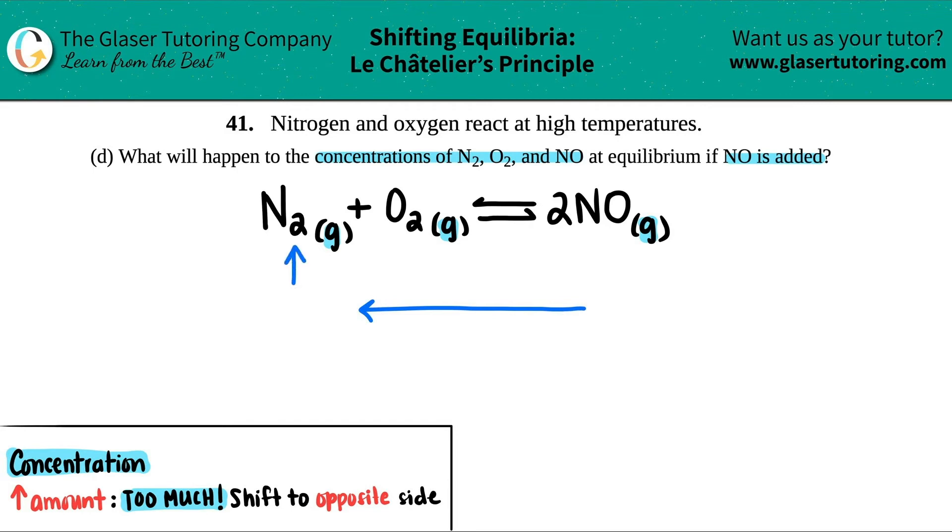So N2 will increase, O2 will increase, and NO will drop. And there's your answers.